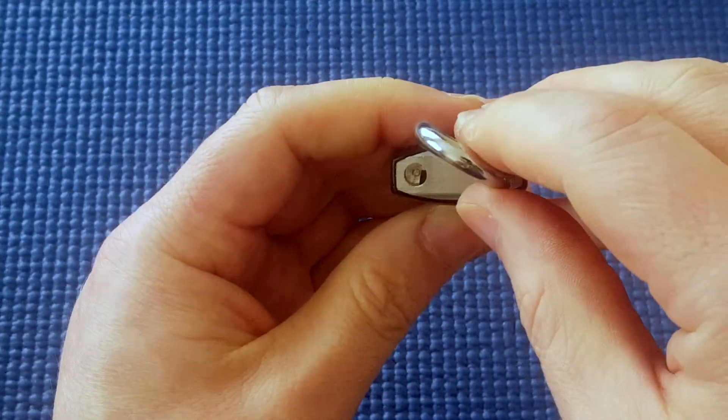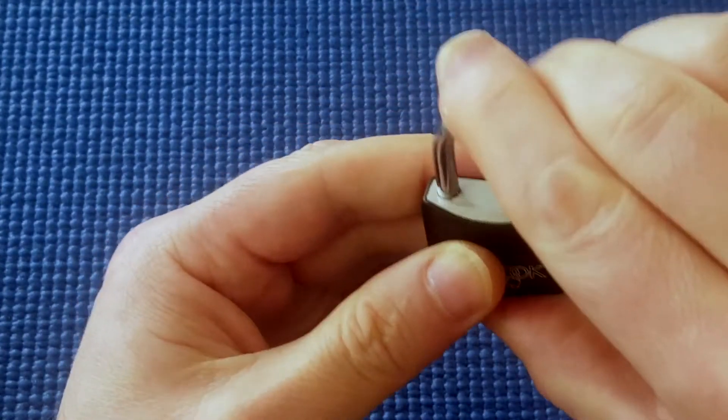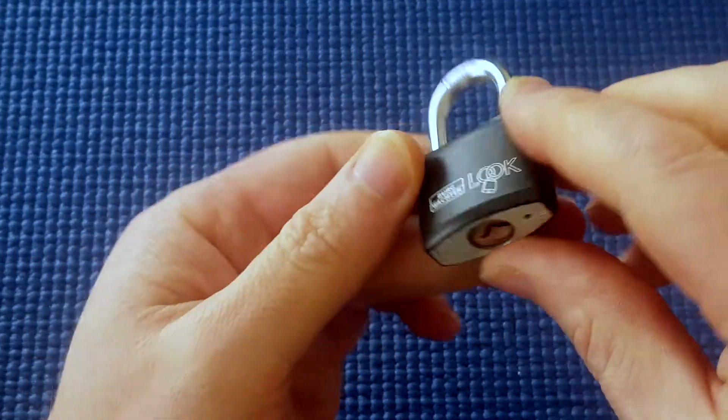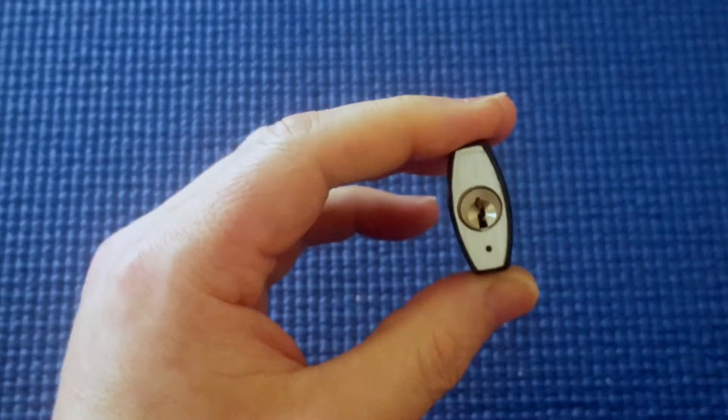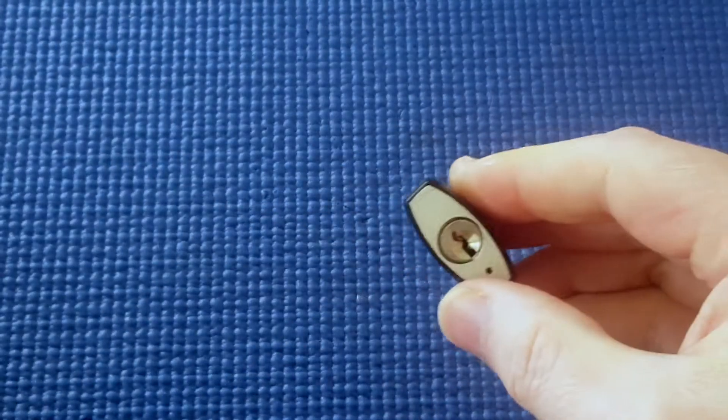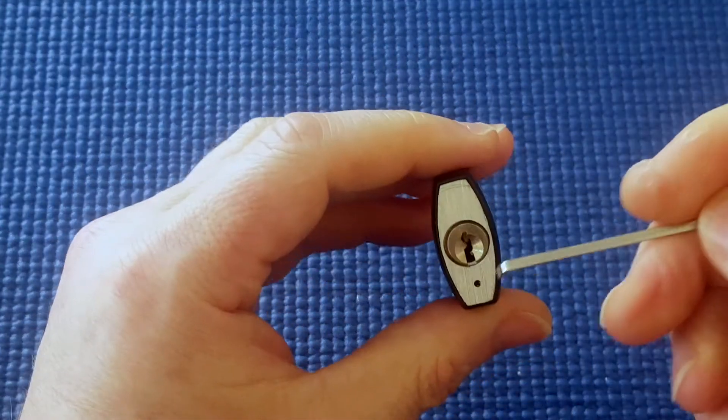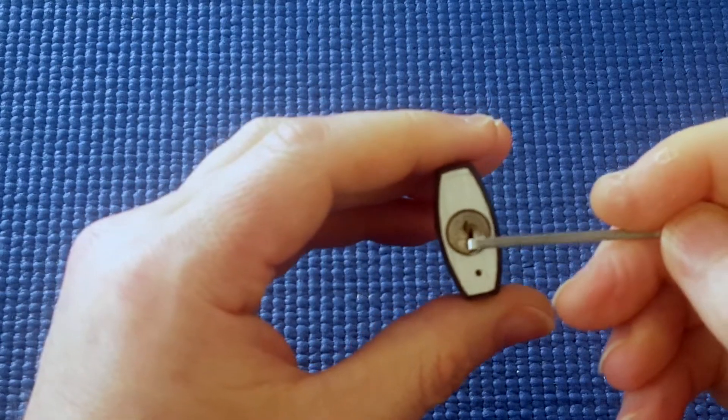If I had really small shims, I don't know if I'd be able to shim it, but I don't have shims that small. What I found is that a low-skill rocking attack was able to get in.